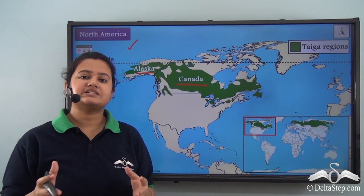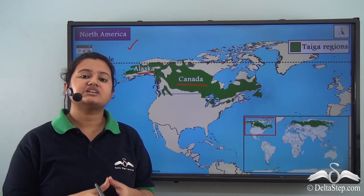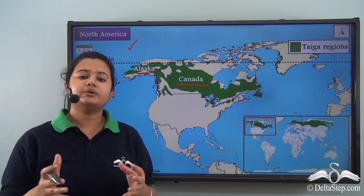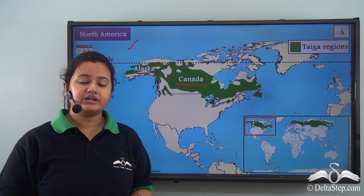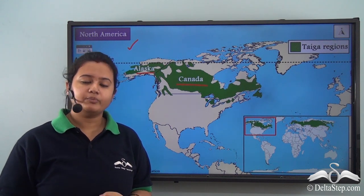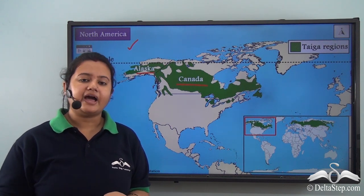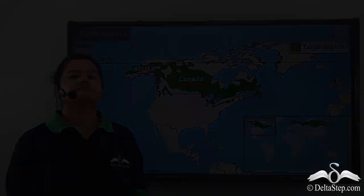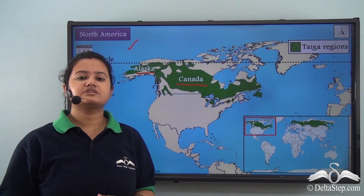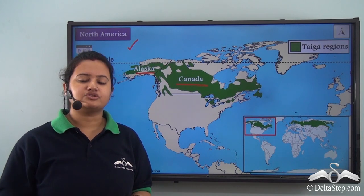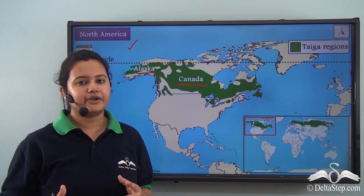The Taiga region is only present in the northern part of the world, in the continents of Europe, Asia, and North America. We shall now discuss the climatic conditions of this biome.